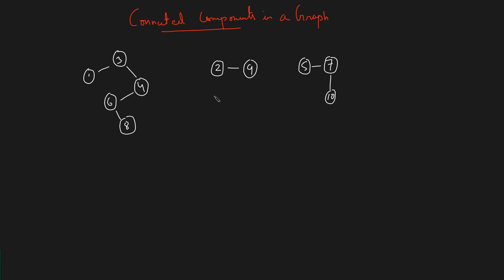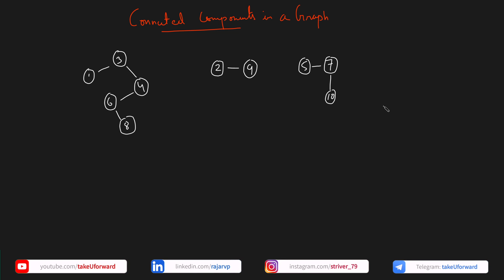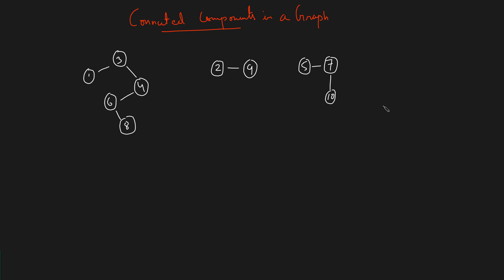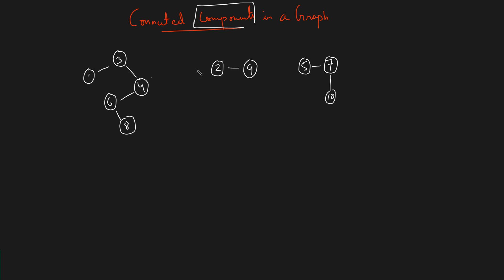In this video we will be learning about connected components in a graph. You might be thinking these are three different graphs, but whenever you see a structure like this in a question, you're not going to call it three graphs. Rather, you will say you have a disconnected graph. There is a term called connected components — this entire structure is a graph, and each part can be called component one, component two, and component three.